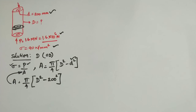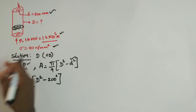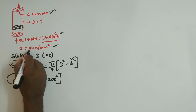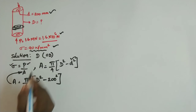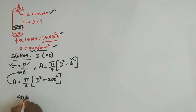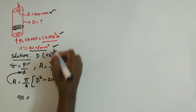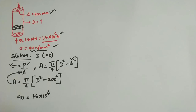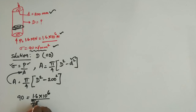Substituting the values: stress is 90 newton per mm squared, load is 1.6 into 10 to the power 6 newton, divided by area which is pi by 4 times (capital D squared minus 200 squared).